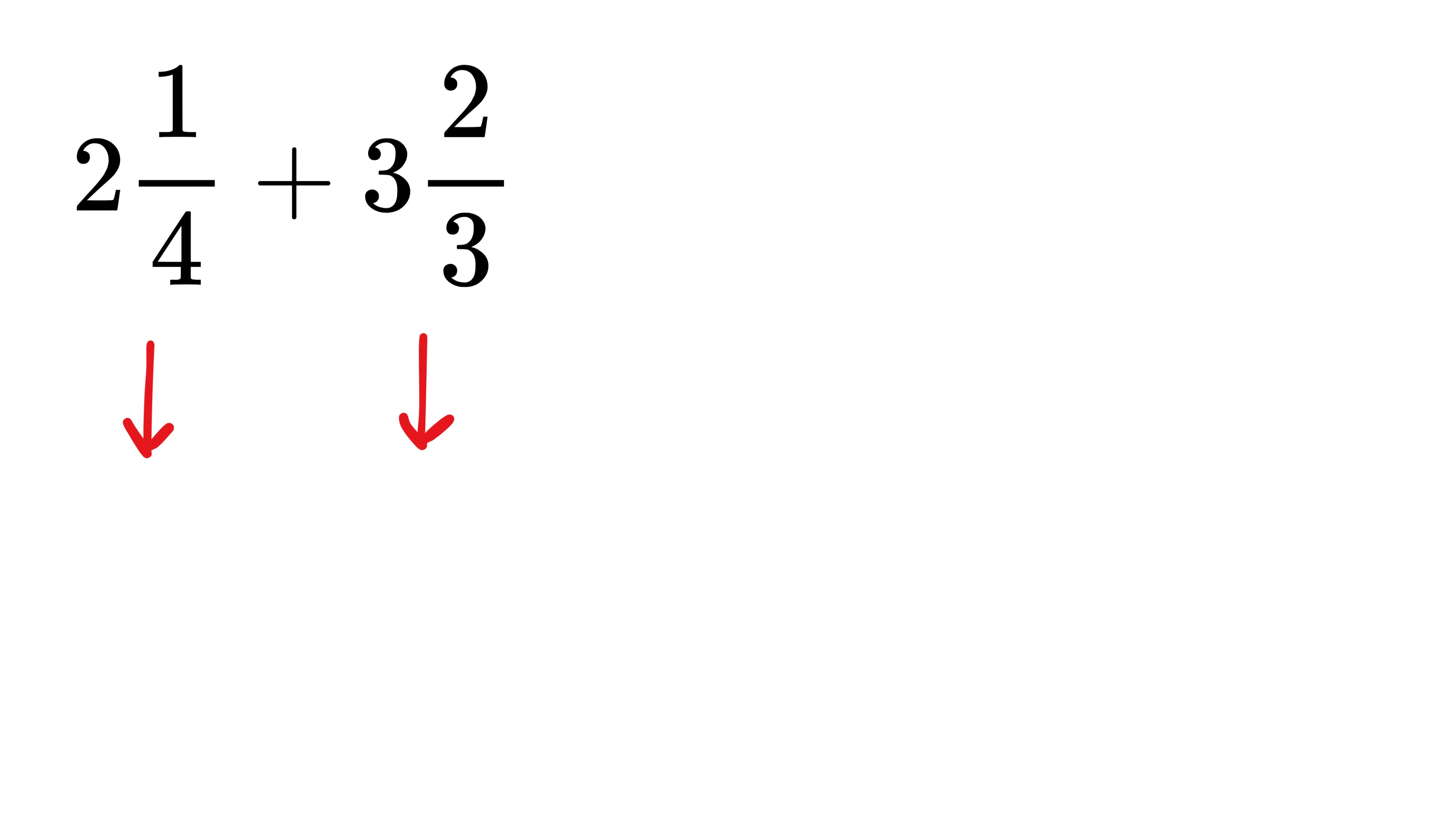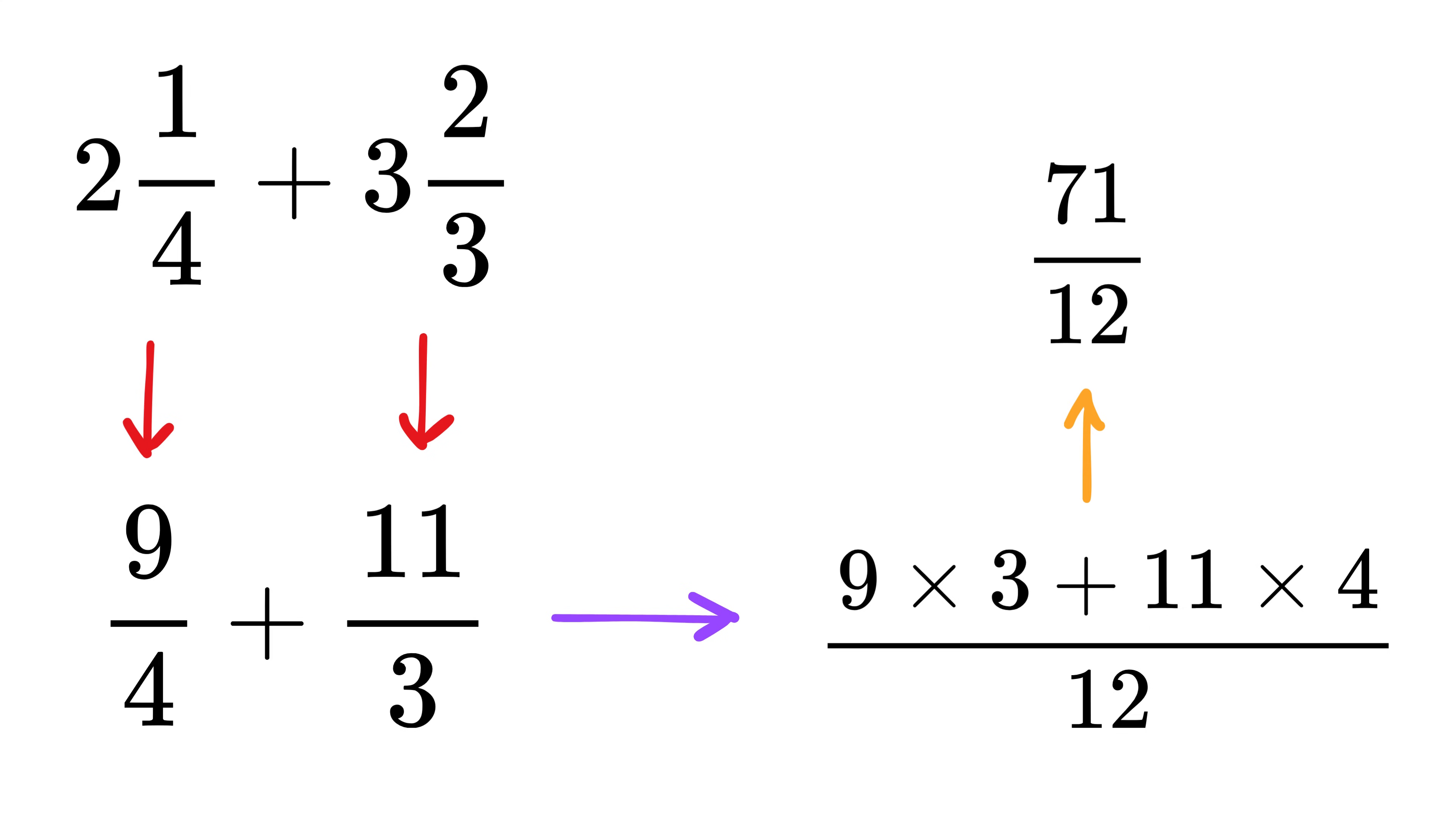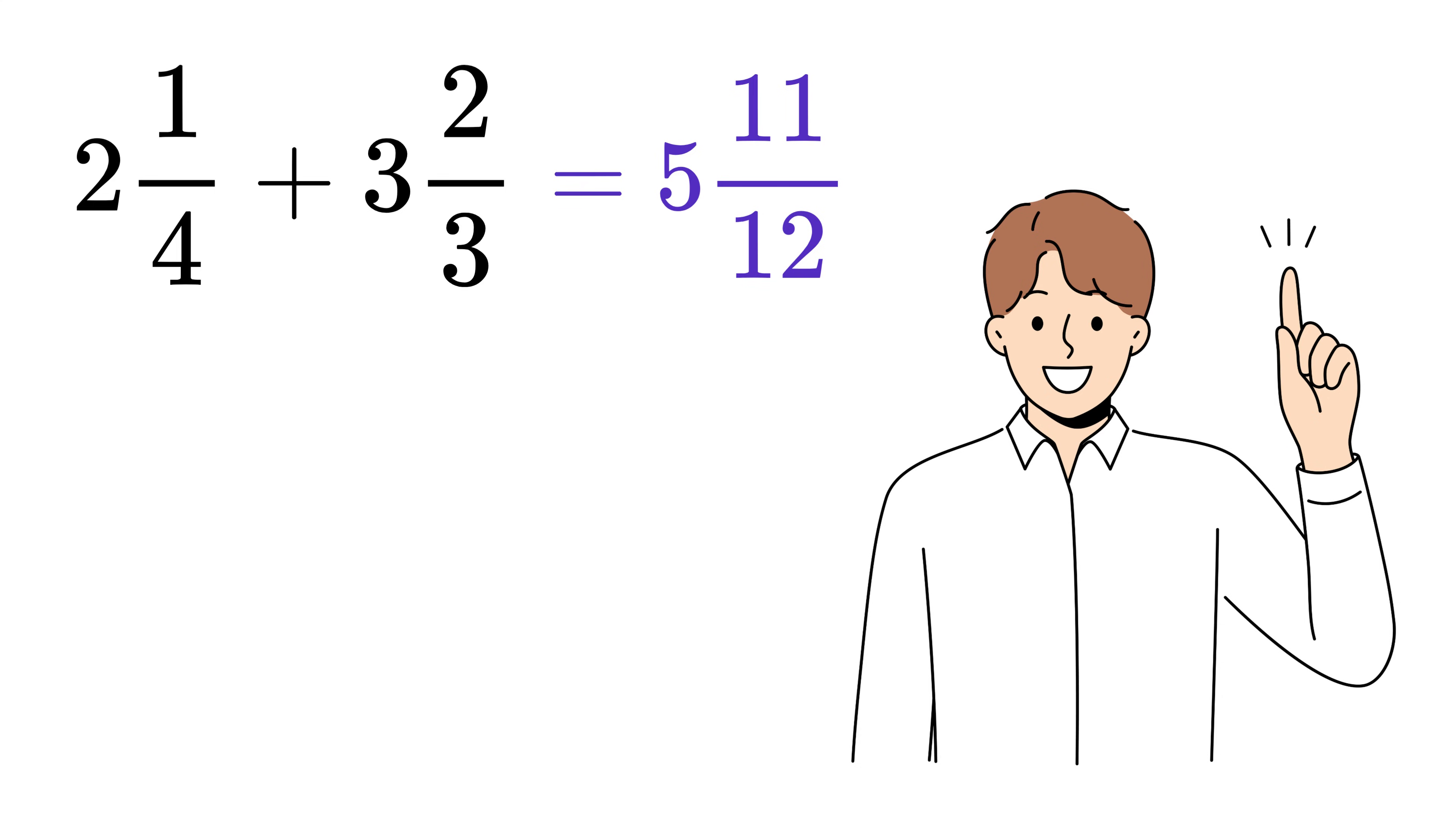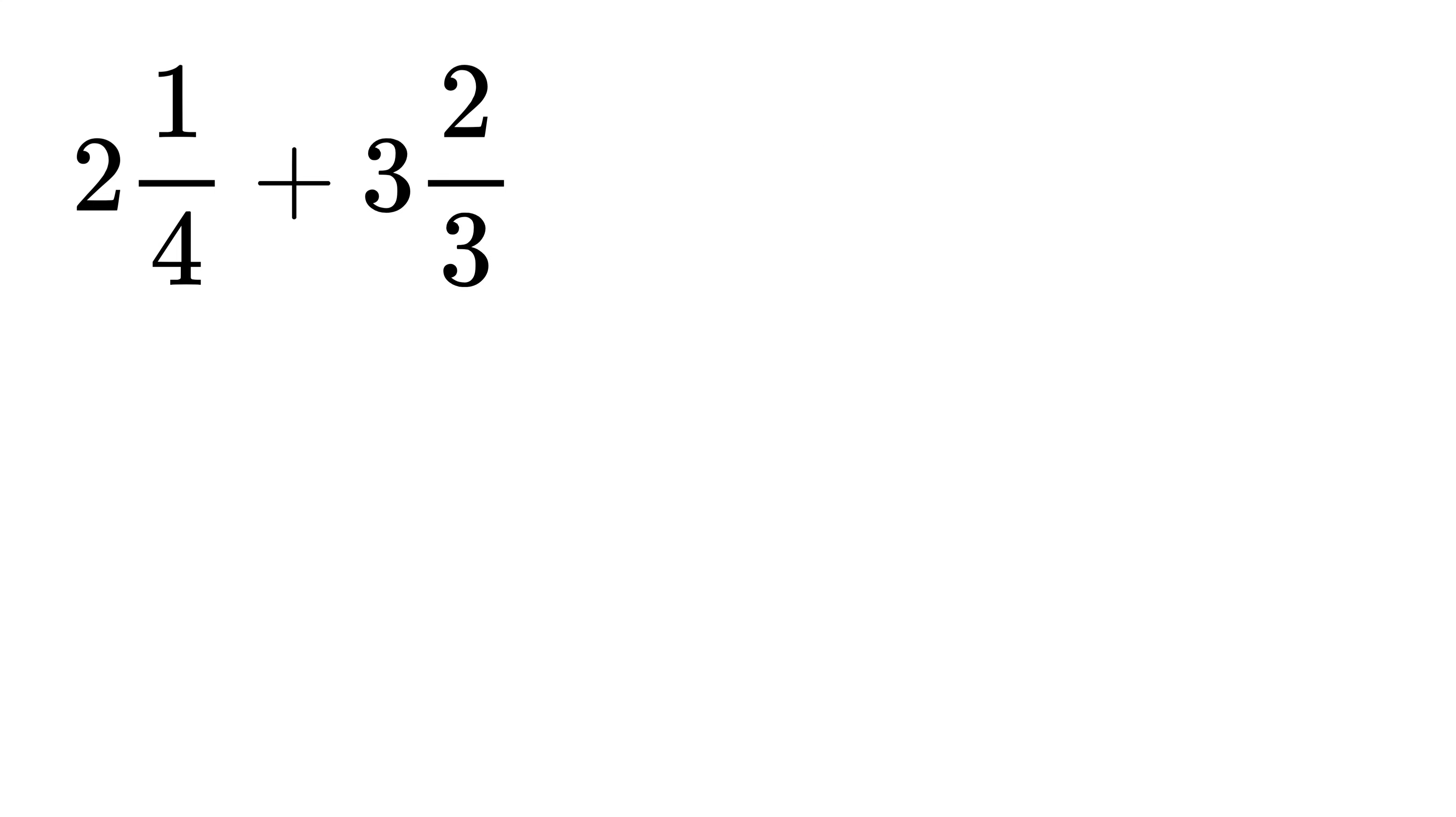fraction into improper fractions like this, and then we find a common denominator so the fractions can be added correctly. Once the fractions are added, we simplify the result and finally convert it back to mixed fractions. This method always works, but it can take time, which is why learning a faster and smarter approach is so useful.